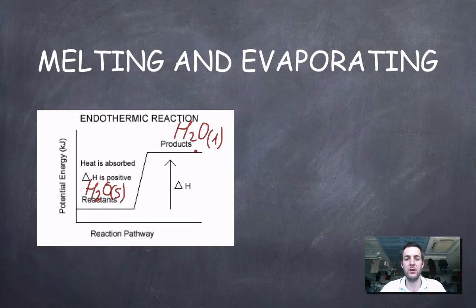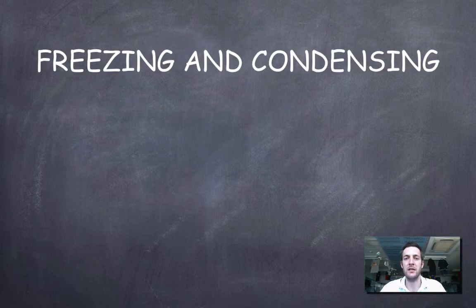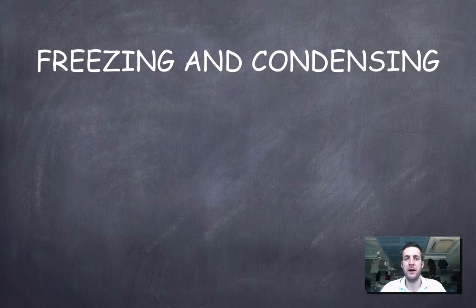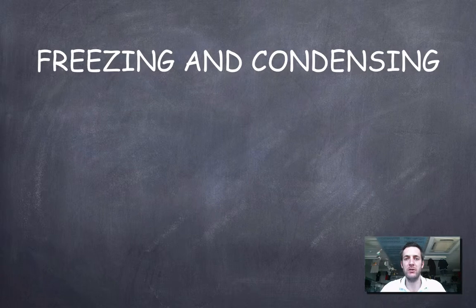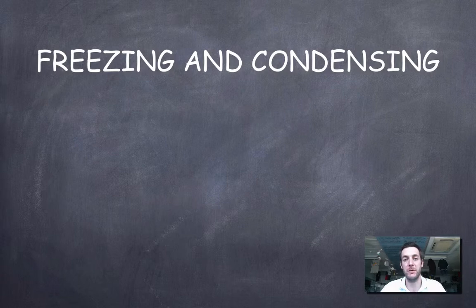Now, we'll start looking at freezing and condensing, and these sometimes have the potential to confuse people, because people think, if I'm going to freeze water, I have to make it colder, and things that get colder are endothermic. But we've just seen that melting is endothermic. So often it's easy to think of freezing as being the opposite of melting, and therefore it must be exothermic.